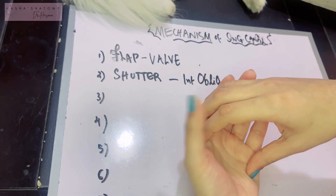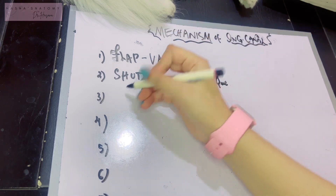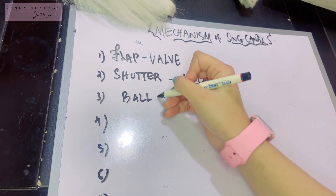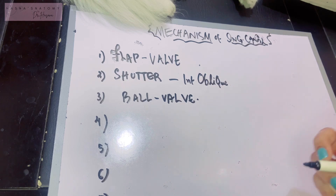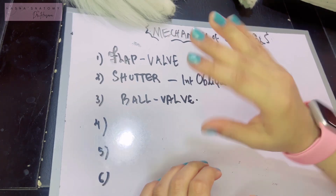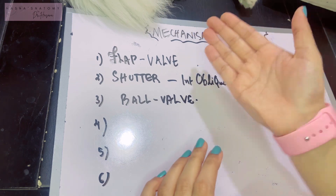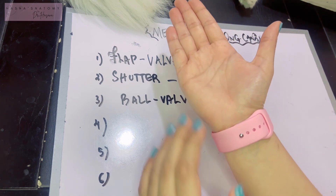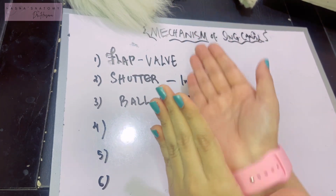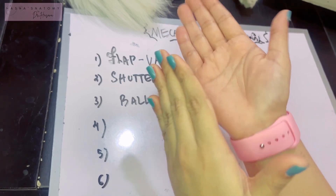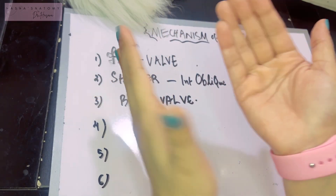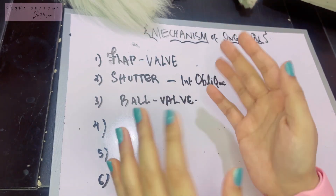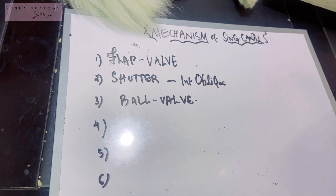The third mechanism is known as the ball valve mechanism. The cremasteric muscle contracts to close the superficial inguinal ring. As you recall, the cremasteric muscle has superficial loops and deep loops; the deep loops are close to the superficial inguinal ring, so it is closed whenever the cremasteric muscle contracts.